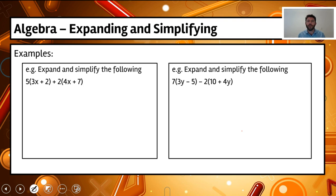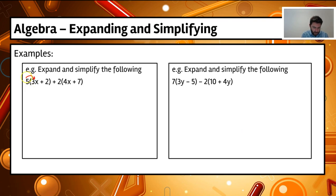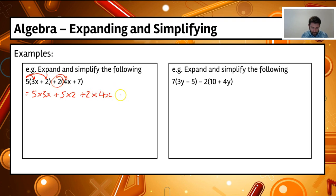We're going to expand and simplify. The first one is 5 brackets 3x plus 2, then plus 2 in brackets 4x plus 7. For the first one, we've got 5 times 3x and 5 times plus 2, so it equals 5 times 3x plus 5 times 2. And then we've got plus 2 times 4x, and then plus 2 times 7.